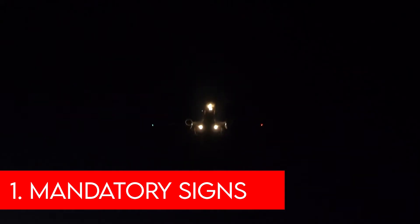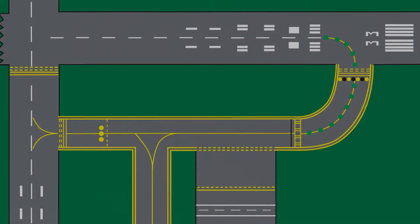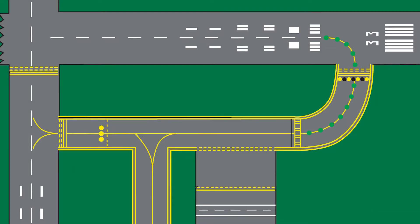Mandatory instruction signs have a red background with white text. They are used to indicate an entrance to a runway or critical areas where an aircraft is prohibited from entering. There are four examples of mandatory signs that we will explore.